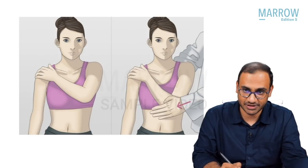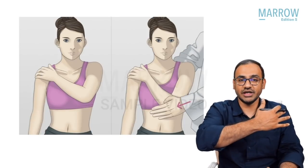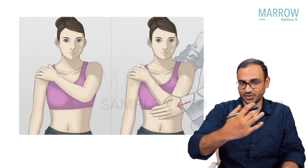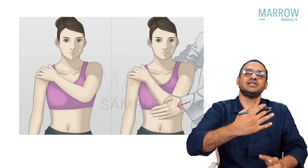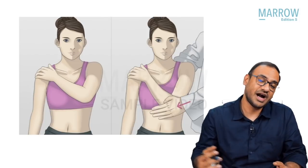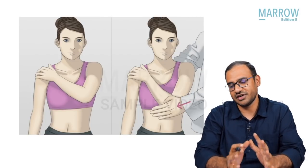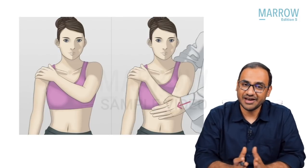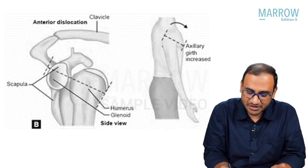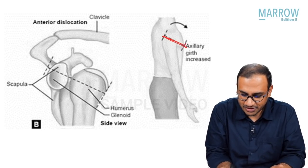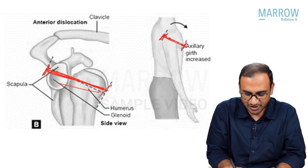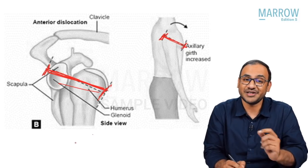The second test is Duga's test, where you ask the patient to touch the opposite shoulder. Because the patient already has abduction and external rotation, he cannot adduct and internally rotate to touch the opposite shoulder. The only way he can do so is by lifting his hand up, making it difficult. So difficulty with adduction, internal rotation, and touching the opposite shoulder is a positive Duga's test. Callaway's test measures the girth of the axilla — when the head dislocates, the girth of the axilla increases.